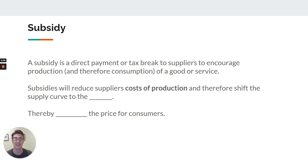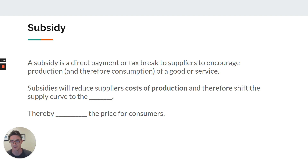Now, subsidies. A subsidy is a payment to suppliers. It has other forms, but usually it's just a dollar payment — an amount of money paid to suppliers per unit of production. So if you produce one unit of a particular good or service, the government will pay you $20, for example. It's trying to encourage production by the market. Unlike direct provision, which creates the government's own supply, a subsidy is actually trying to increase market supply.